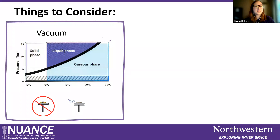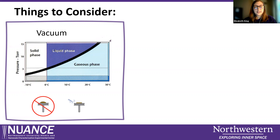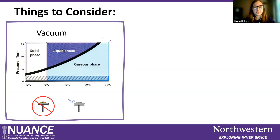Another really common question I get is about powders. When you are putting powders on the pin stub, how do you do that without contaminating the chamber or losing your sample? Our best advice is that you really need very little of your powder to get a good image in the SEM. So put as little as you can, then use either a bulb, a nitrogen gun, compressed air, or something like that and blow off the excess. That way there's no excess powder to escape from the adhesive and get into the chamber.